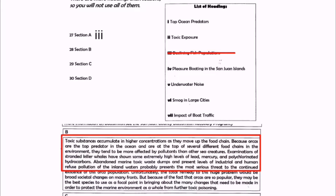Let's read paragraph B. Toxic substances accumulate in higher concentrations as they move up the food chain, so we get the hint that this paragraph is about toxic substances or poisonous pollutants. Because orcas are the top predators in the ocean and are at the top of several different food chains in the environment, they tend to be more affected by pollutants than other sea creatures. Orcas have to travel far away in search of food and as a result they face a polluted environment.